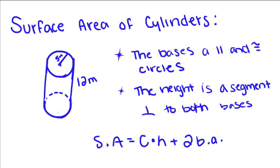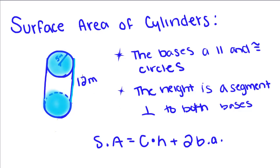We're going to talk about surface area of a cylinder. First of all, a cylinder is a three-dimensional shape with the bases parallel and congruent. This circle right here is parallel and congruent to this circle right here, which means that this height right here has to be perpendicular to both of these circles.